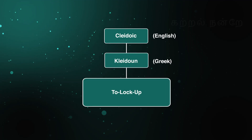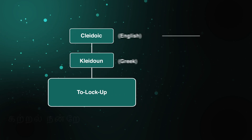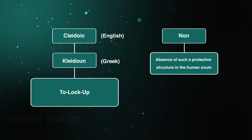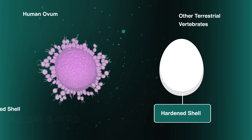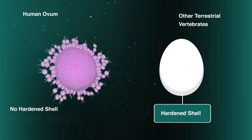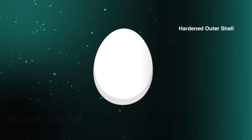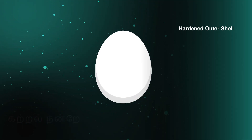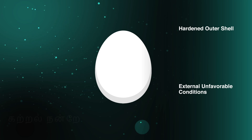The term cleidoic comes from the Greek word kleidon, which means to lock up or to enclose for protection. The prefix non- indicates the absence of such a protective structure in the human ovum. The ovum lacks a hardened shell, unlike the eggs of other terrestrial vertebrates. In birds and reptiles, the hardened outer shell of the egg protects the embryo.